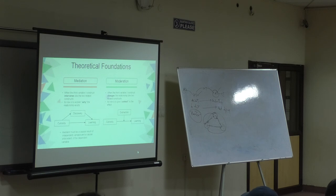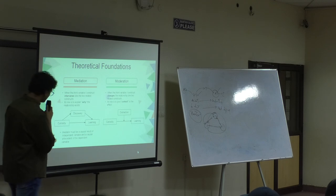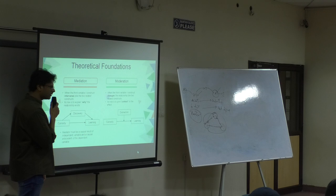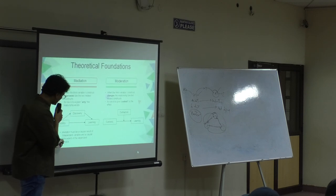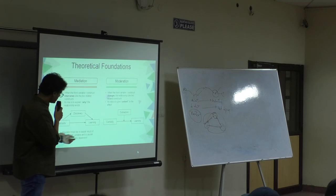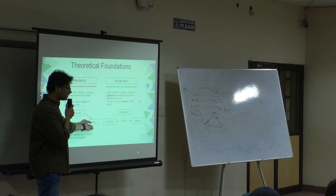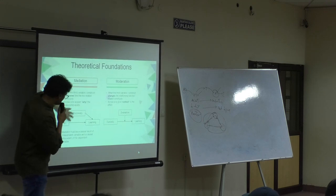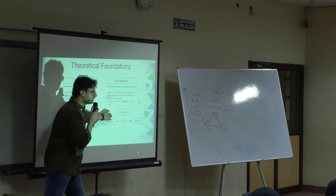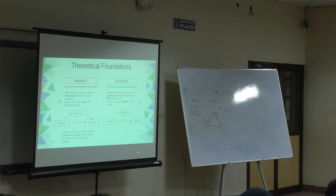Mediator must be a causal result of independent variable and a causal antecedent of the dependent variable. The mediator should be correlated. If there is no relation, that is moderation. Moderator must not be the causal result. That's the only difference. This is the basic understanding of mediation and moderation.